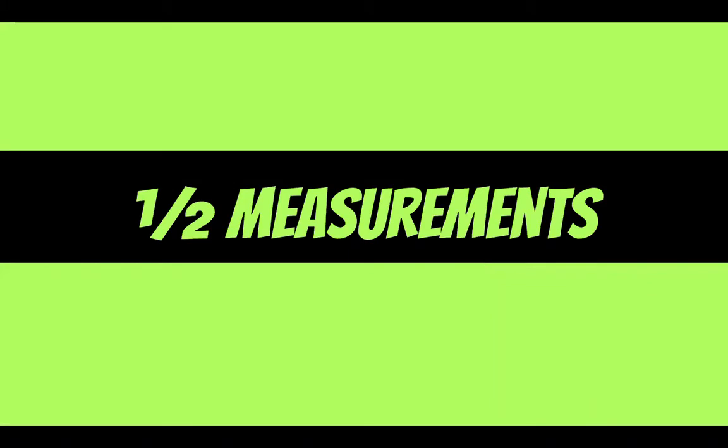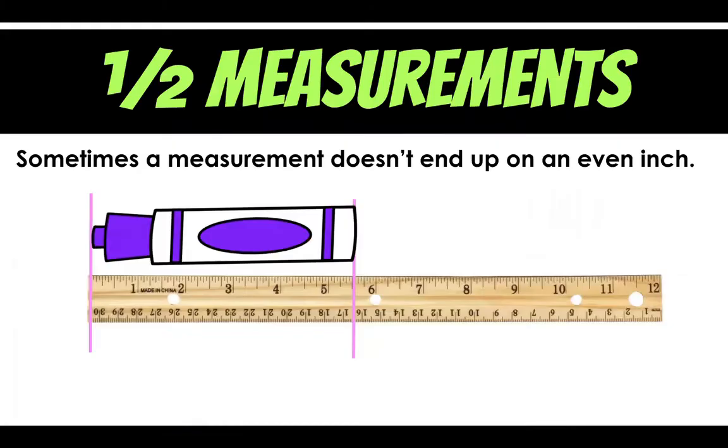Now what about half measurements? Sometimes when I'm measuring things don't line up right on the line of a number. So let's take a look at this marker. Sometimes a measurement doesn't end up on an even inch. Where do you see this lined up at? Now when I look at my ruler here you can see that there's these little dashes in between the inches. So we have one inch here,